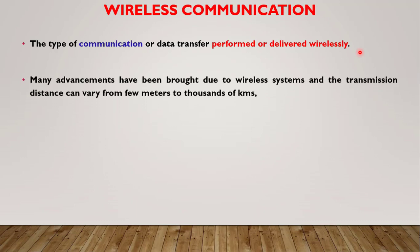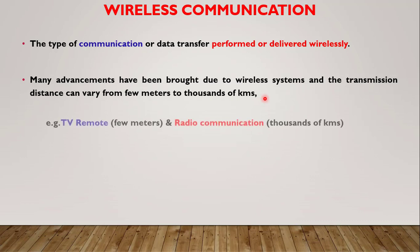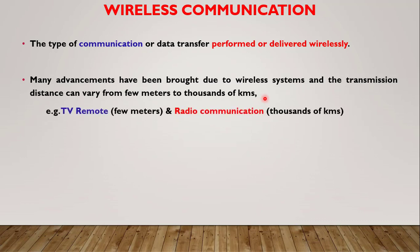Due to wireless communication, many advancements have been brought to our lives. With the help of these wireless communication systems, you can control your TV using a remote system that works for a few meters. On the other side, you can transmit information up to thousands of kilometers, like using your cell phones or satellite phones. So these are two main examples: one works for a few meters, the other for thousands of kilometers.